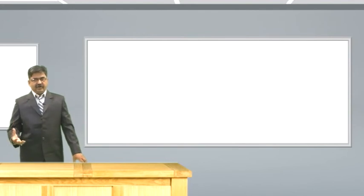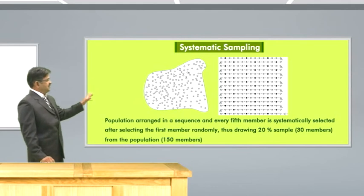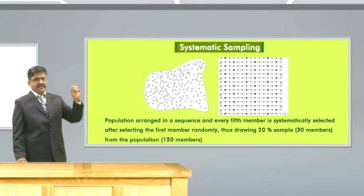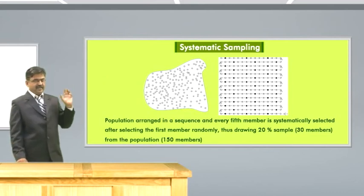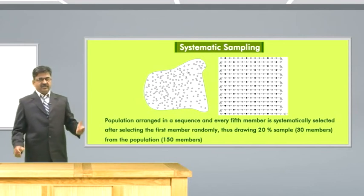Another method of probability sampling is systematic sampling. Systematic sampling is often used in place of simple random sampling. In this method, every nth member of the population is systematically selected for the sample. However, the first unit of the sample is selected using simple random sampling. In this figure, you can see the whole population is listed in a series, and then every fifth member is selected from that population. Therefore, a 20 percent sample is selected whereby we select some 30 members from the population. This is called systematic sampling.